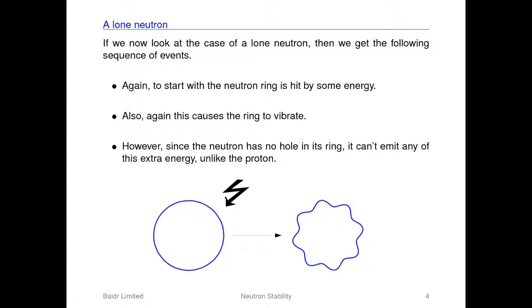However, the neutron unlike the proton is a complete ring, i.e. it has no hole. Thus the neutron is unable to emit any of this energy. Hence over time this energy builds up until it reaches a critical value at which point the neutron ring breaks into a proton and an electron as well as emitting some energy, i.e. a standard beta decay.